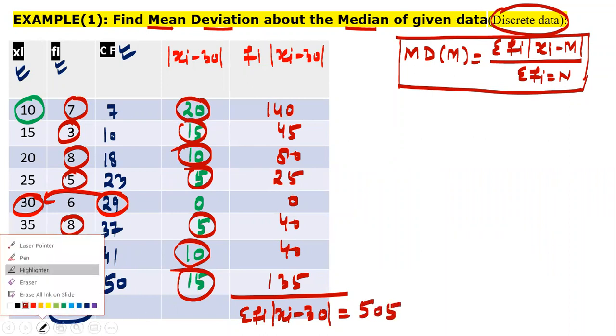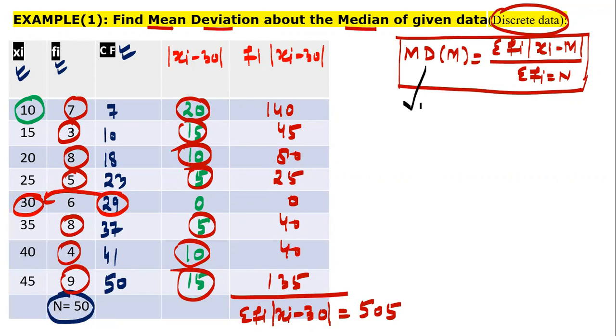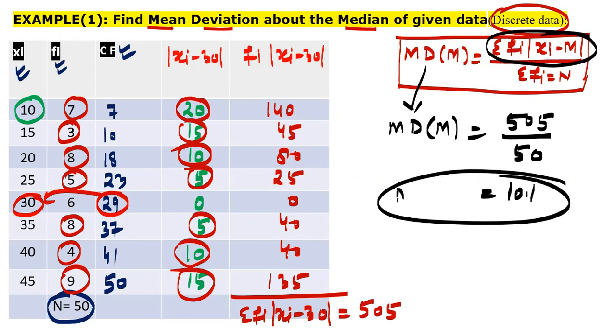Now find out mean deviation about median. Substitute its value. Its value is 505 upon N 50. Its value will be 10.1. Mean deviation about median.